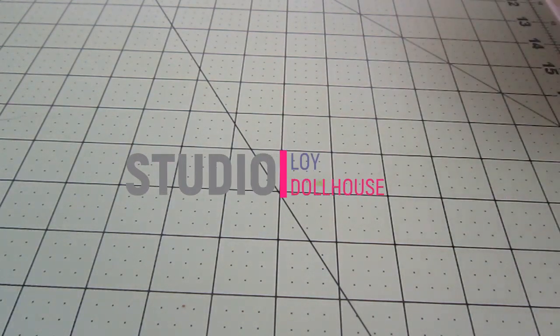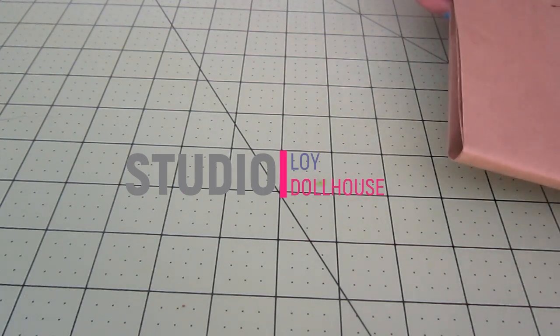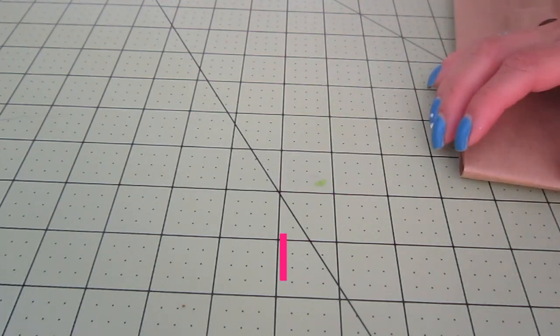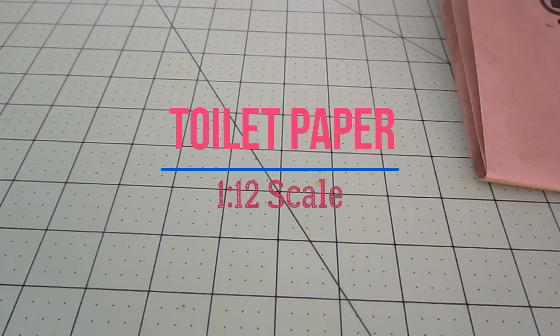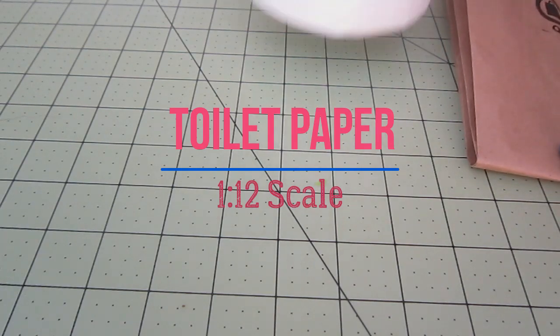Hello my friends. Today we are going to be working on making toilet paper for the dollhouse. We're going to make it on a scale 1-12. These are some of the things we'll need.